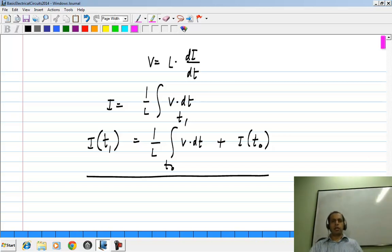Clearly the current in an inductor at a given instant depends not only on the voltage at that instant, but on voltages at all previous instants. Again just like the capacitor, an inductor is also an element with memory. Capacitor stores charge and inductor stores flux.